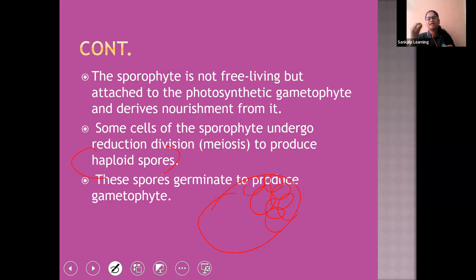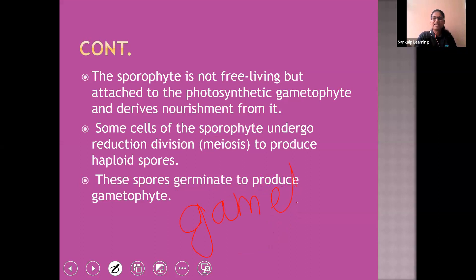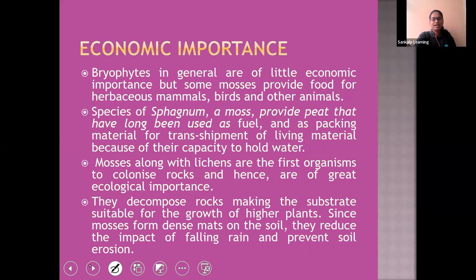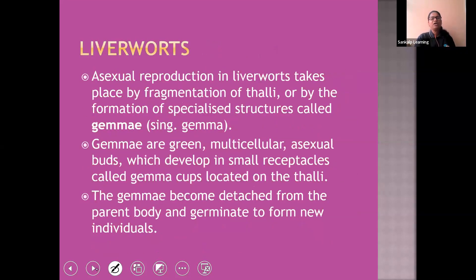The diploid zygote produces a multicellular body called the sporophyte. The sporophyte is not free-living — it is attached to the photosynthetic gametophyte and derives nutrients from the parent gametophyte. Some cells of the sporophyte undergo reduction division to produce haploid spores. These spores germinate to produce a new gametophyte, continuing the cycle. The dominant part of a bryophyte is the gametophyte. We will study economic importance and classification of bryophytes in the next session.